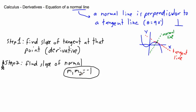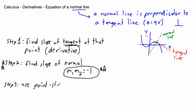To find the slope of the normal, we use the property that m1 times m2 equals negative one. Two slopes that are perpendicular to each other, when multiplied together, give negative one. So the slope of the tangent and the slope of the normal will always multiply to give negative one.